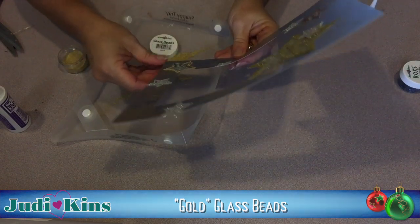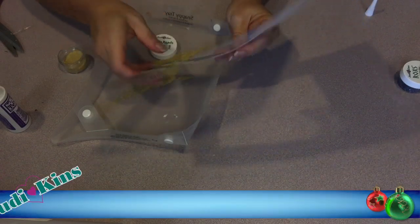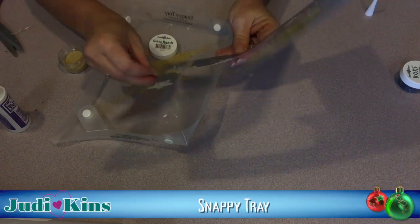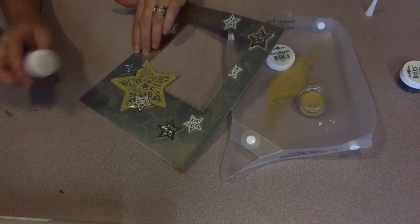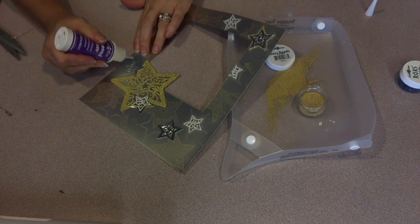And you'll notice I'm doing this over one of Judykin's Snappy Trays, and you'll see why this is so useful when we're finished. Continue to outline and add the gold beads around the remaining silver metallic stars.